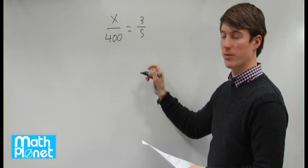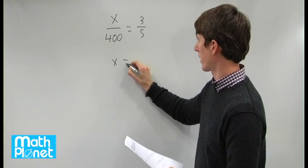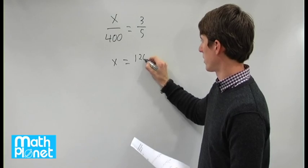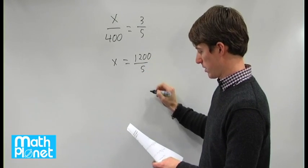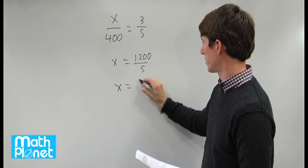So now we can solve for x. Multiply both sides by 400, x equals 1200 over 5, which gives us x is equal to 240.